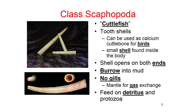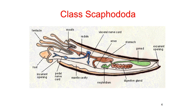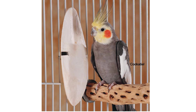They feed on detritus and protozoa — detritus is just dead stuff that collects at the bottom. Here's a general diagram of what they look like on the inside. You can see they have tentacles and a partial foot combined as the body structure called the foot. They have a digestive tract, a ventral nerve cord, and there's the cuttlebone.